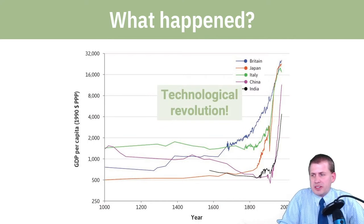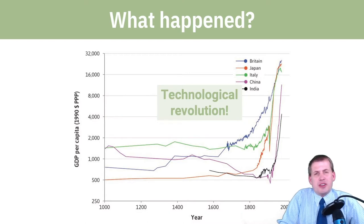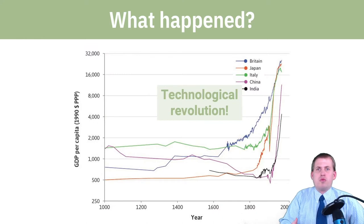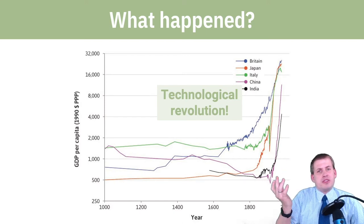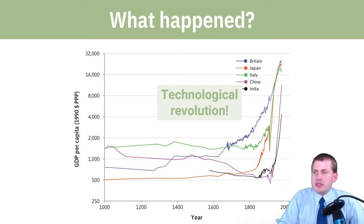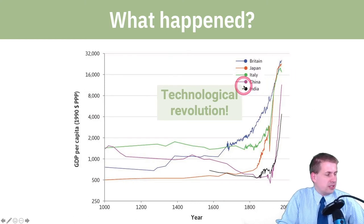Starting in the early 1800s, there were all sorts of new inventions like the cotton gin and other technologies that made it easier to process textiles and food and to harvest things. Farmers were able to double, triple, and quadruple their yields. Because of all this technological growth, standards of living started improving for everybody around the world.